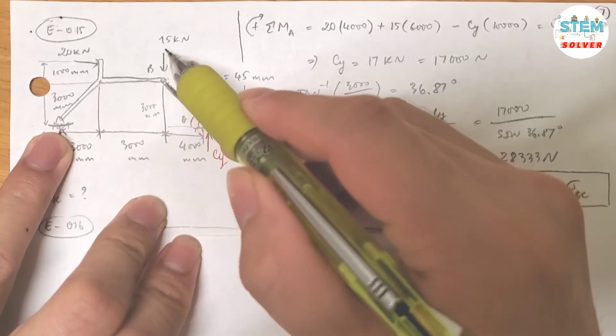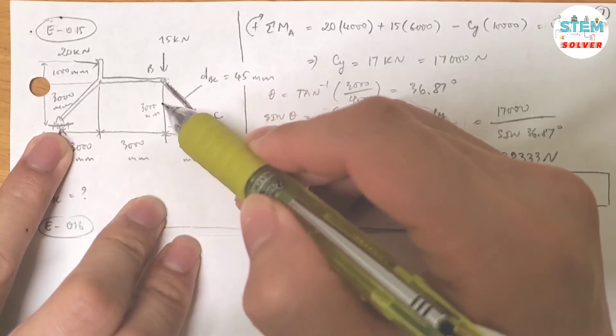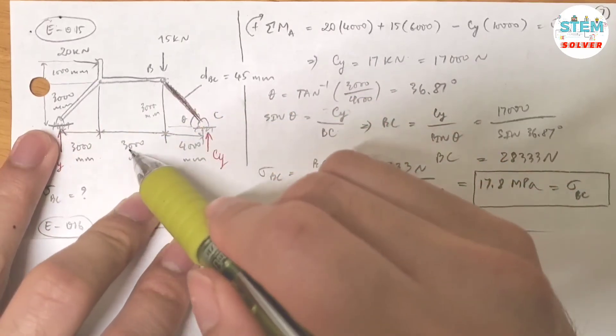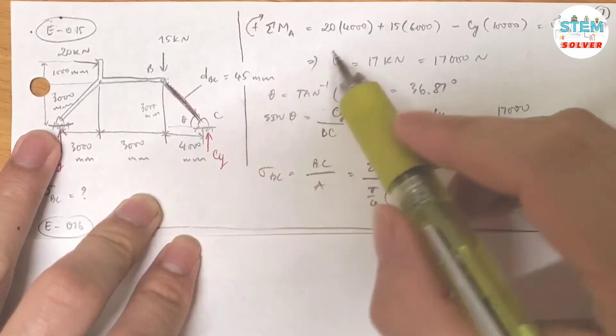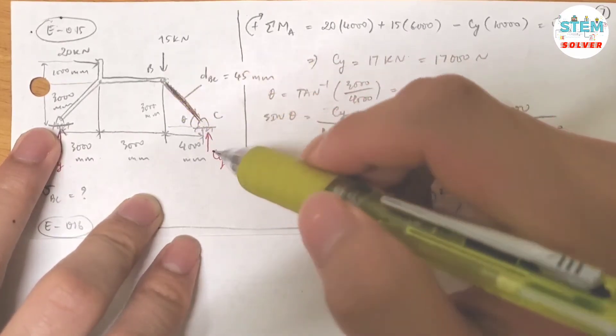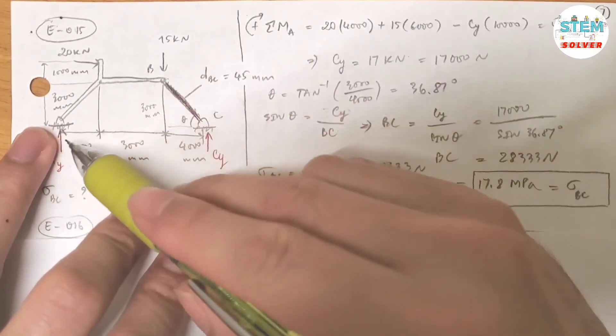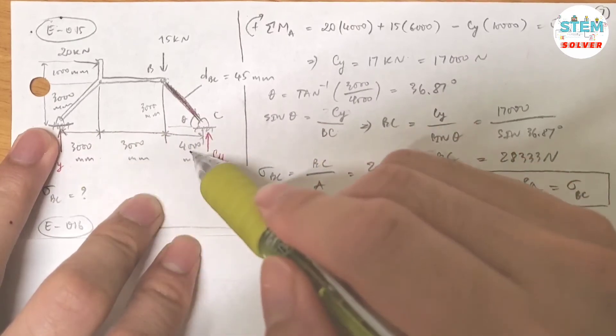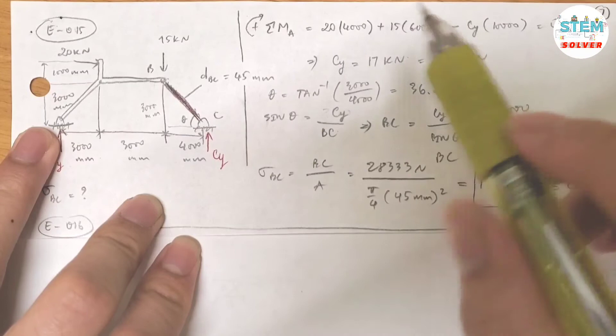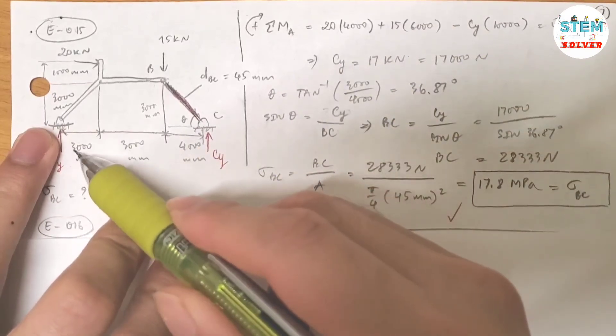So you have from here to here is 3,000, here to here is 1,000, so you have 4,000. And this is in clockwise direction, so positive. This force, clockwise direction positive: 15 times the distance between here and here, so you have 3,000, 6,000, times 15.